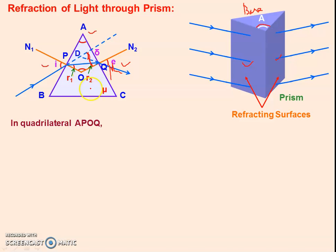In quadrilateral APOQ, the angles are A, P, O, and Q. The sum of these angles is equal to 360 degrees. But angle P and angle Q are each 90 degrees, so 90 plus 90 equals 180. This means the sum of angle A and angle O equals 180 degrees. So we can write A plus O equals 180 degrees. Since angle P and angle Q are 90 degrees each in the quadrilateral, we get this result.